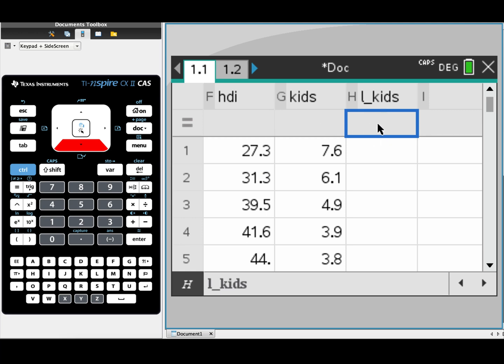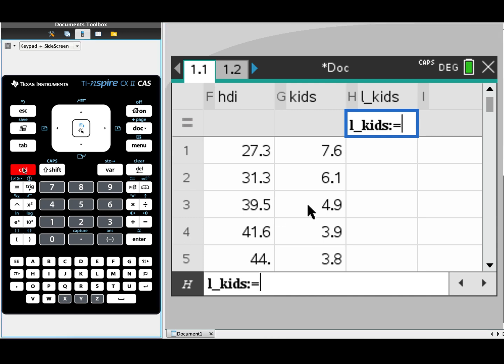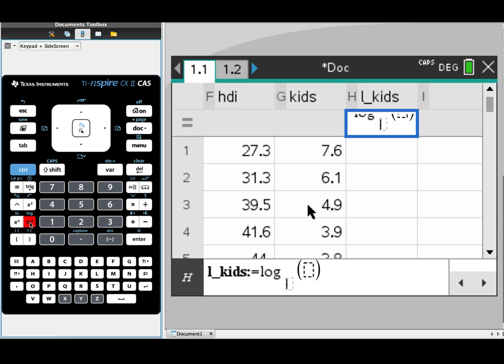And in the second row here, in my function row, I'm going to tell the CAS to find the log of every value in the kids column. So I'm going to press equals. Then I'm going to insert the log function control and log, always base of 10.